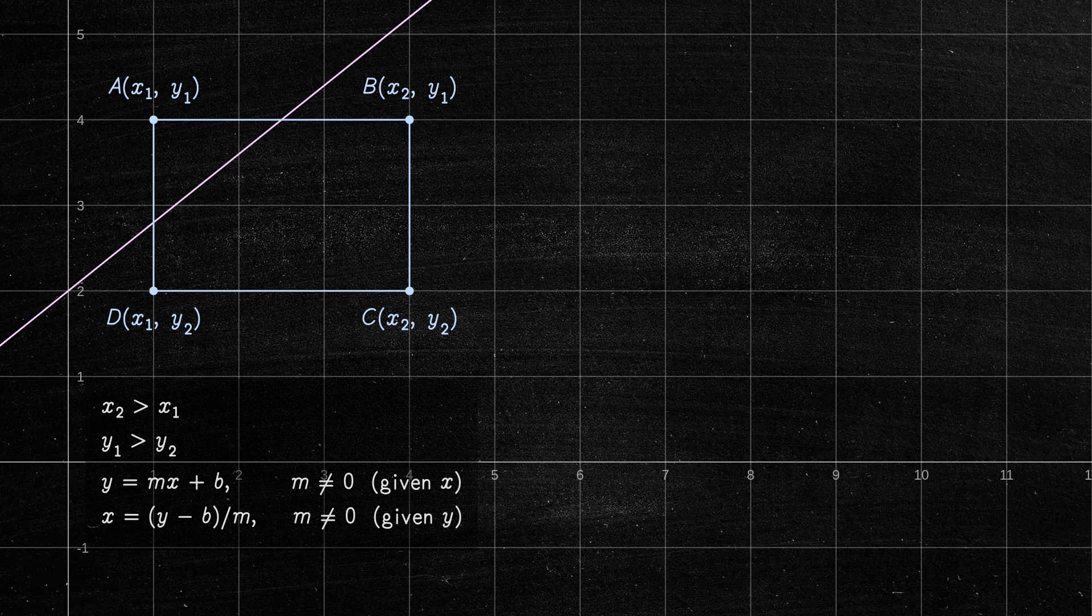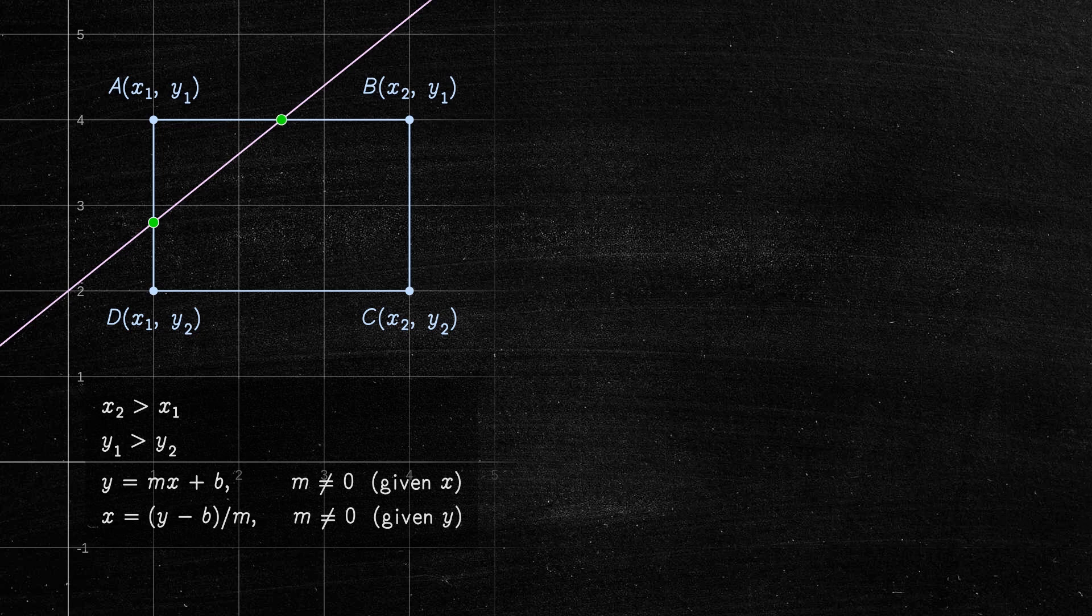The goal is to find the two intersection points between the line and the rectangle. Here is how to do it. First, we need to discard the trivial case when the line is vertical or horizontal.